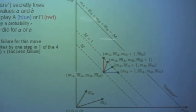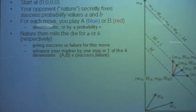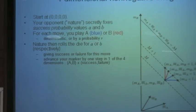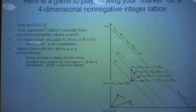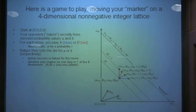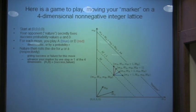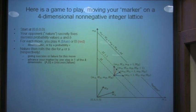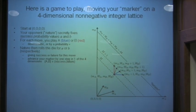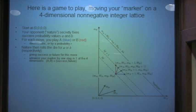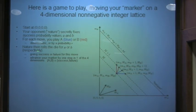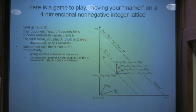This will get, I hope, a little bit clearer as you see. If we pick blue, which is A, then nature rolls the die using probability little a and tells us whether we win or lose. And if we pick B, nature rolls the die with probability B and tells us whether we win or lose, succeed or fail.